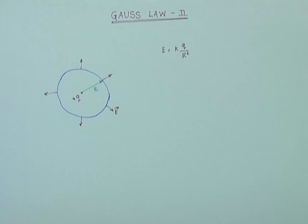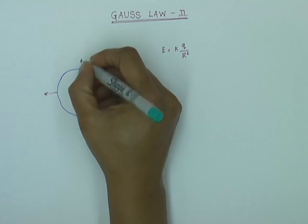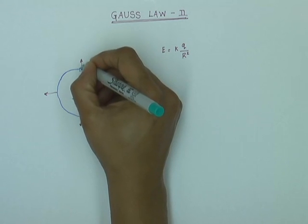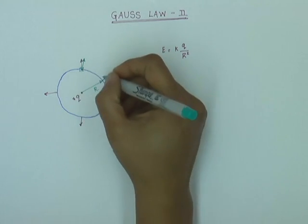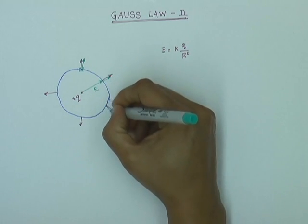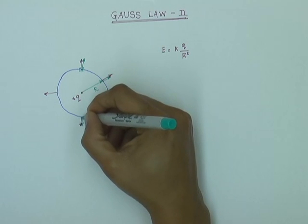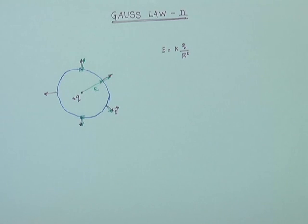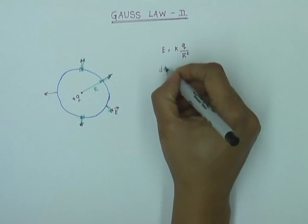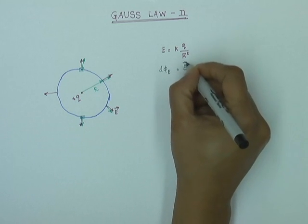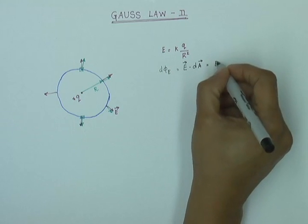Now I will divide the sphere into small surface elements. At each point on the sphere, dA is also acting out radially, because that is the perpendicular direction at every point on the sphere. So we can say that for the sphere when the point charge is at the center, dA and E are parallel, so theta is zero and cos theta is one. Thus the flux through each element, dφ_E, is equal to E · dA, which is simply E dA.